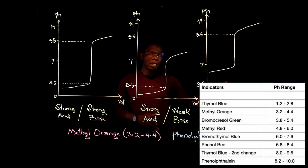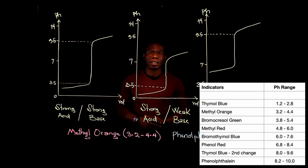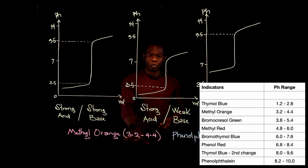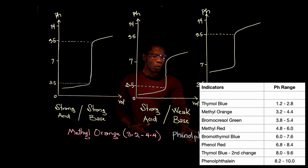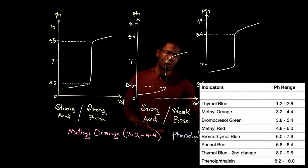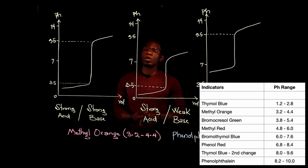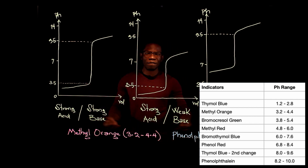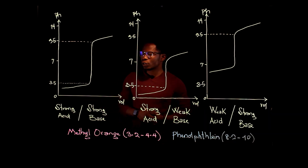Out of the different kinds of indicators on the table, I've chosen two to explain this question. The first one is methyl orange, which is effective within a pH range of 3.2 to 4.4. The second one is phenolphthalein, which is effective within a pH range of 8.2 to 10. We want to see which indicators are effective for which kind of neutralization reaction.